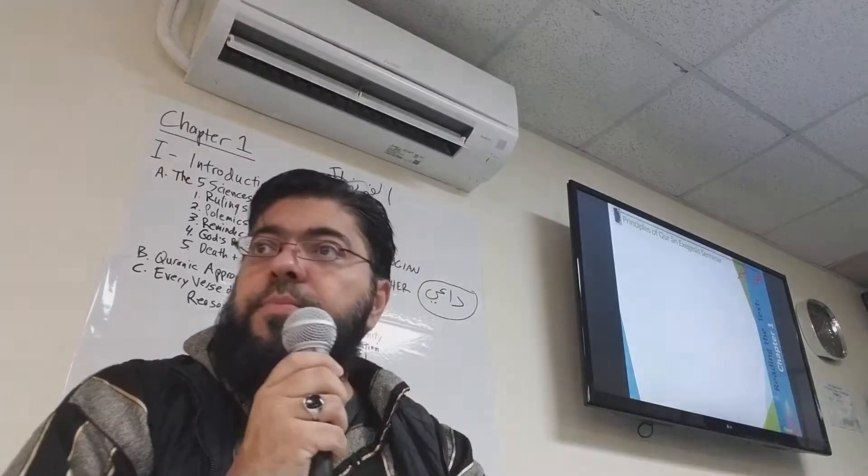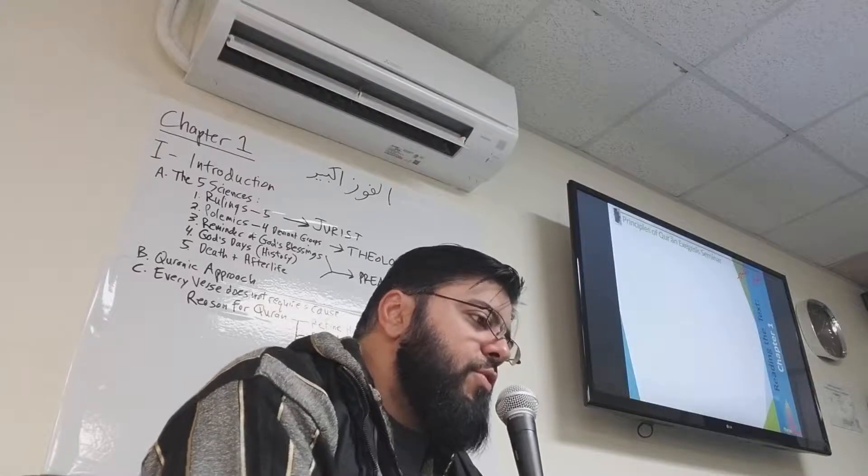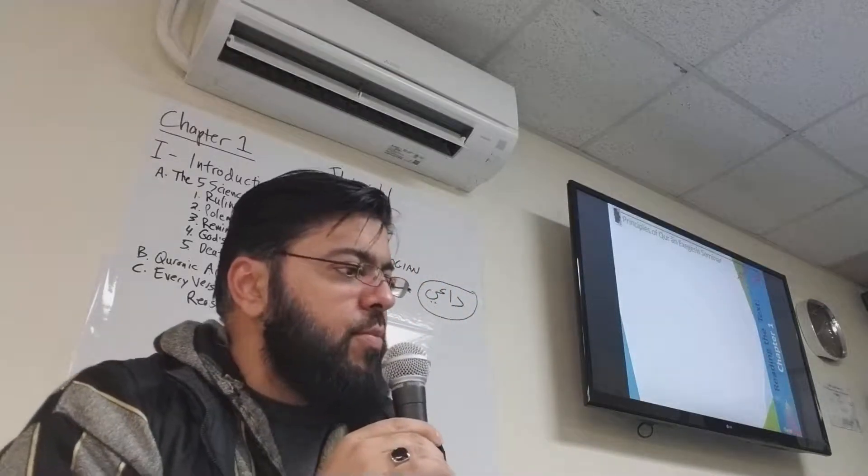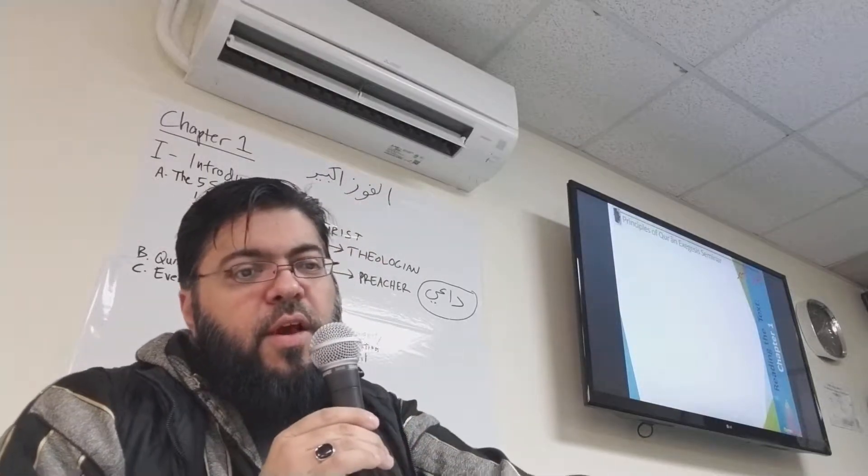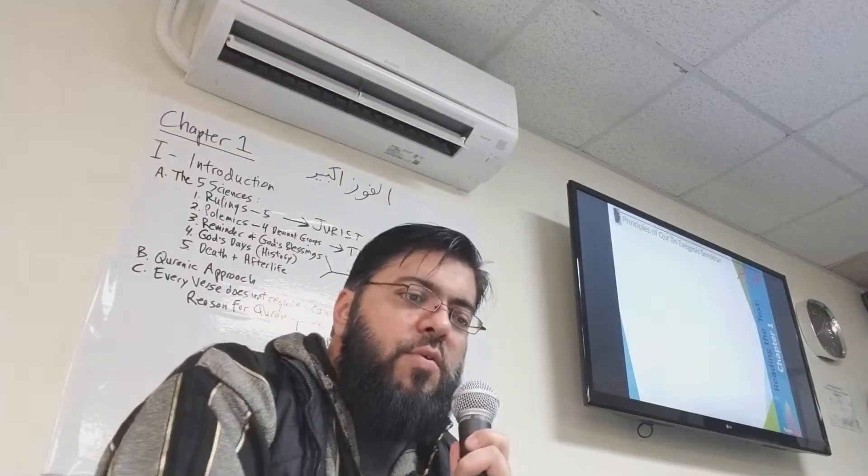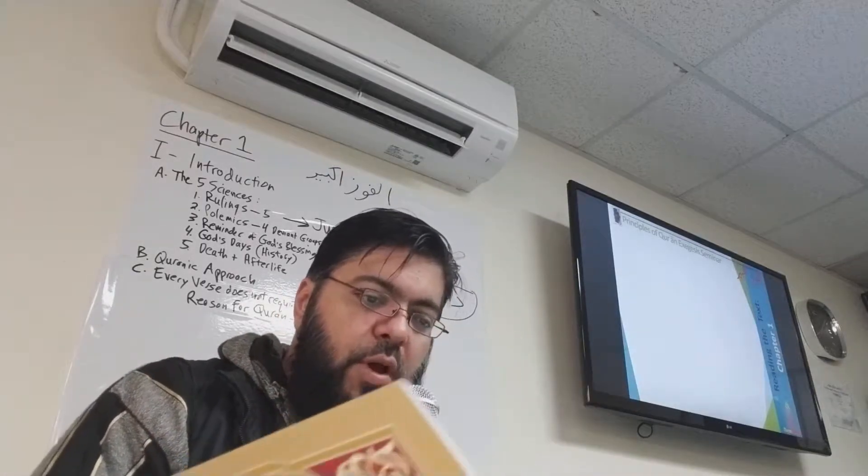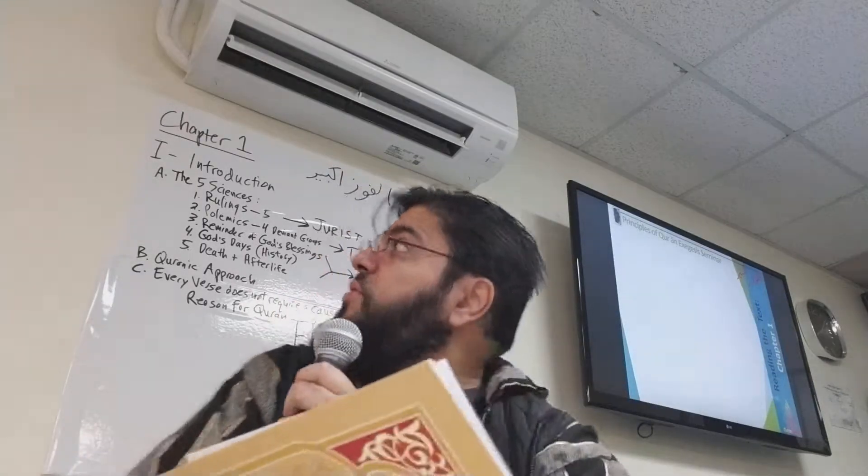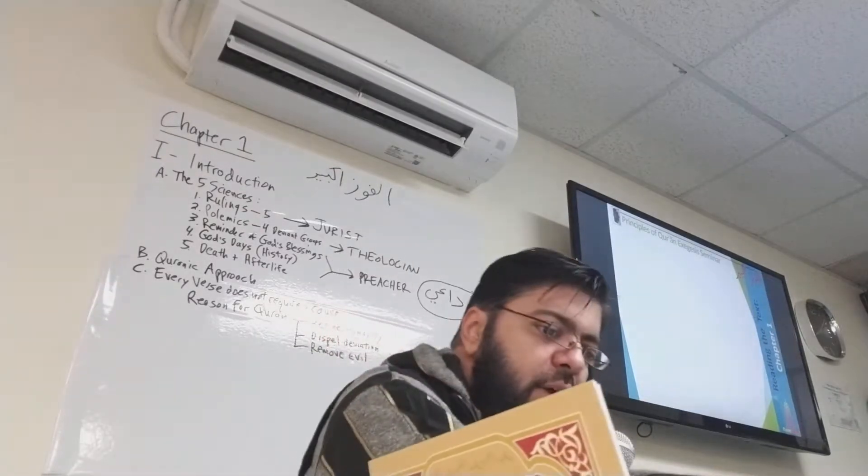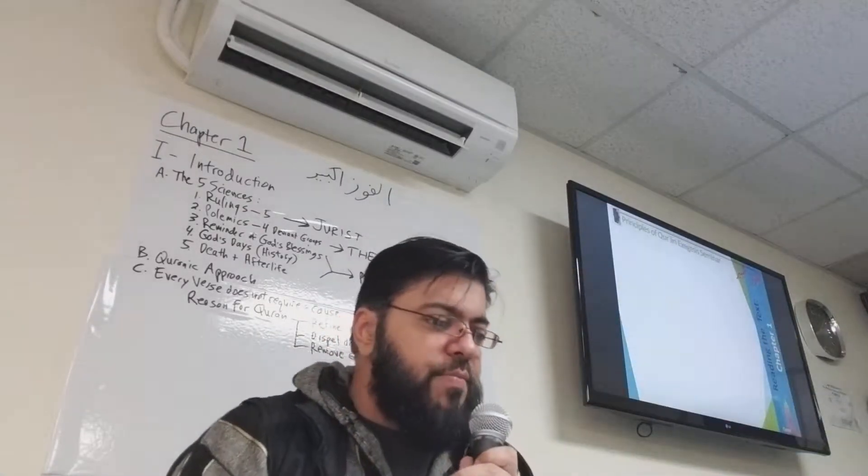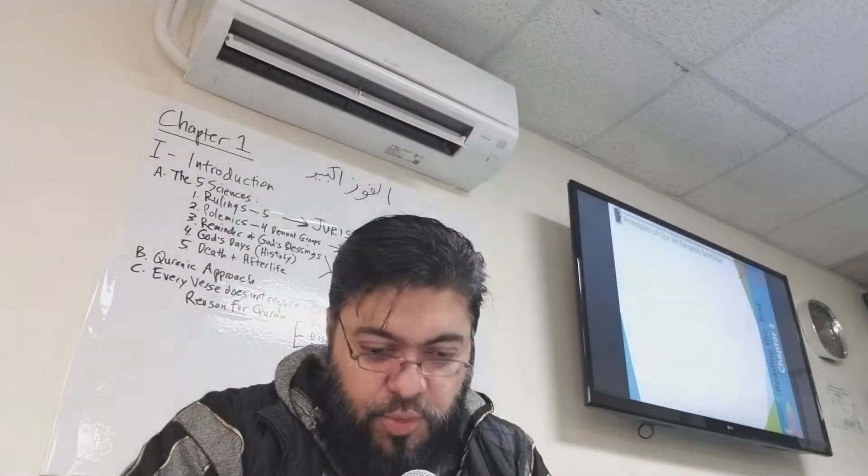Bismillah ar-Rahman ar-Rahim. So let's begin by reading some of the text, and then we'll go into the biography of Shah Waliullah, rahimahullah ta'ala, and then we'll come back to the text, inshallah. So last week we did Muqaddimatul Kitab, and we started Baab al-Awwal. If you see the whiteboard in front of me, I started making an outline. We're reading in Arabic. This is the book. It's in PDF, so you're going to be following along.